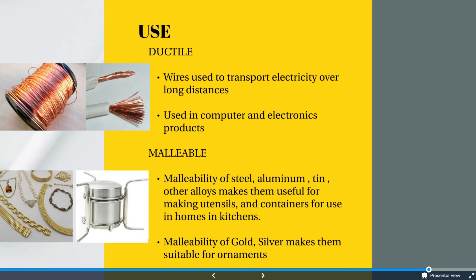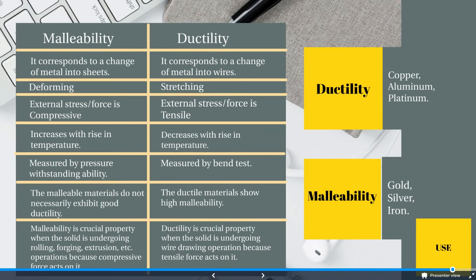The major differences between malleability and ductility are as follows. Malleability corresponds to a change of metal into sheets, while ductility corresponds to a change of metal into wires. Malleability is the act of deforming, whereas ductility is the act of stretching. The external force applied is compressive for malleable materials, and tensile for ductile materials. Malleability increases with a rise in temperature, while ductility decreases with a rise in temperature.